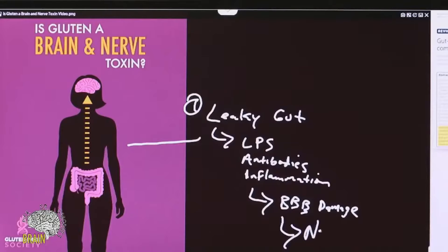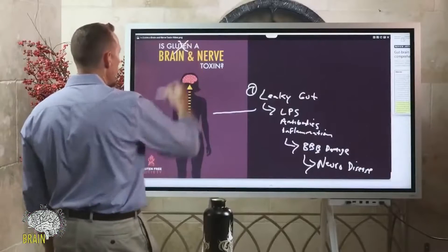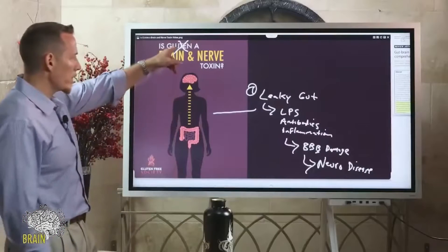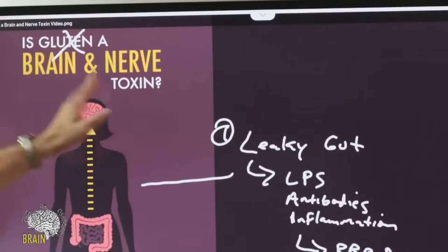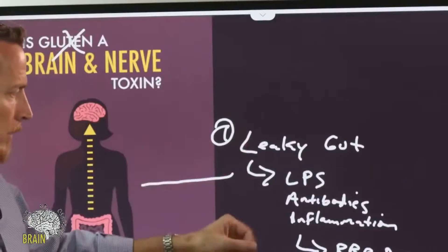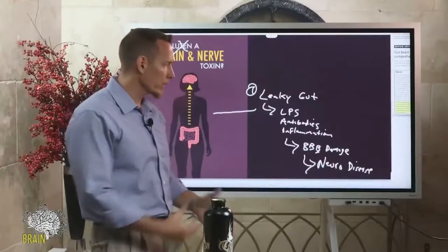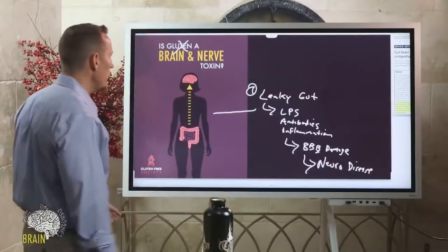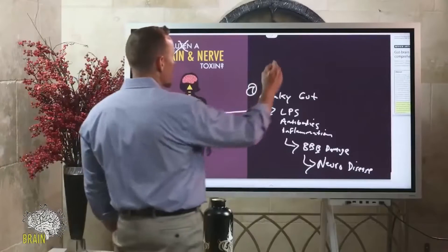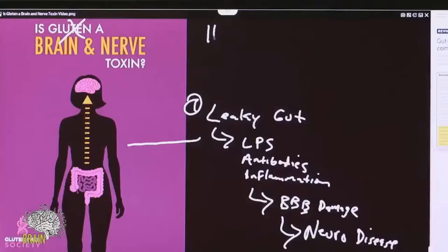So what do we do about it? We have to stop this cascade of events from happening. We've got to recognize that gluten might be playing a role. Now that's not to say that all nerve diseases are only caused by gluten — there certainly are other factors at play here — but if you've got any one of those conditions and your doctor has not done this, this is very important: you ask for this.